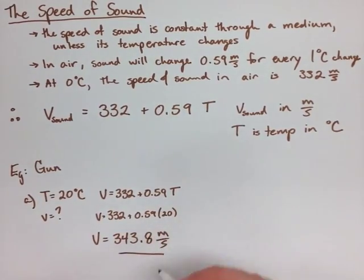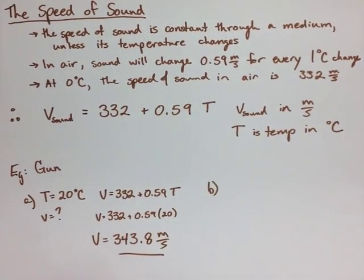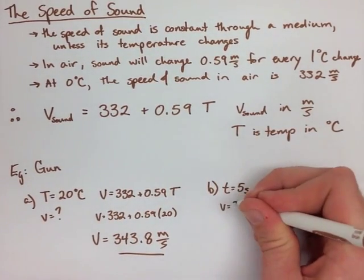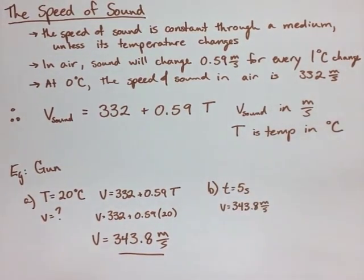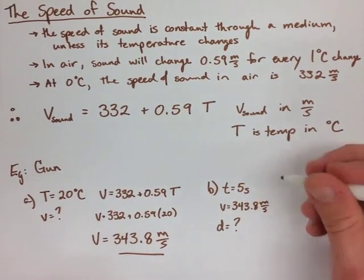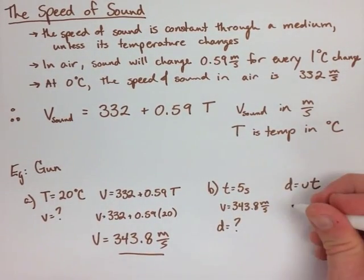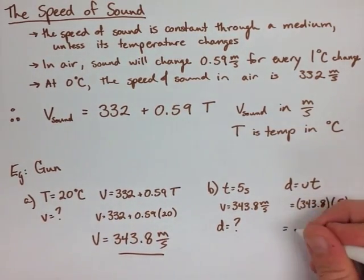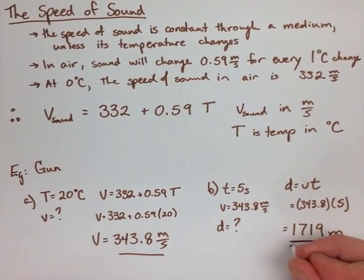The second question asks, if you hear the sound five seconds later, how far away are you? Well, we know that this is constant velocity, so we can just use D equals VT, rearranged from V equals D over T. We substitute our numbers in and solve to get 1,719 meters away.